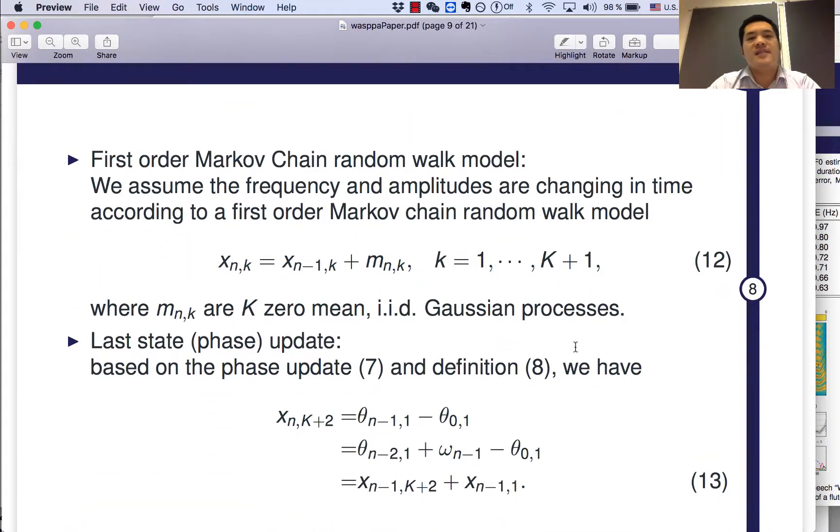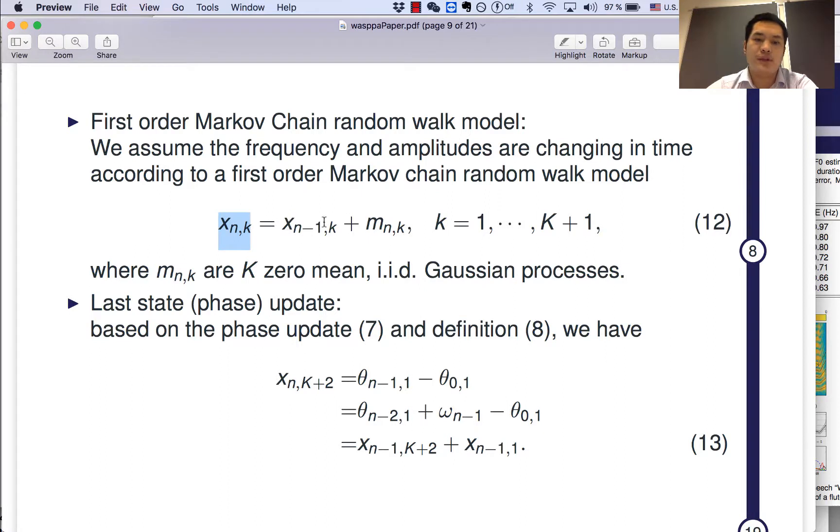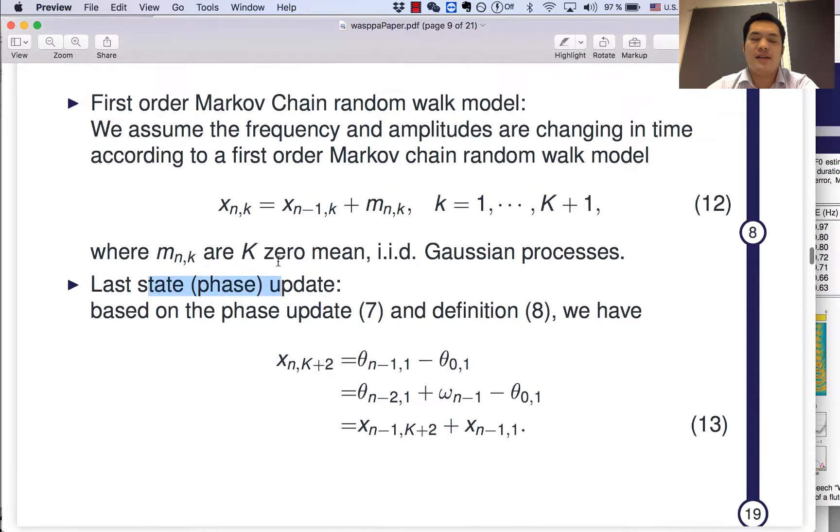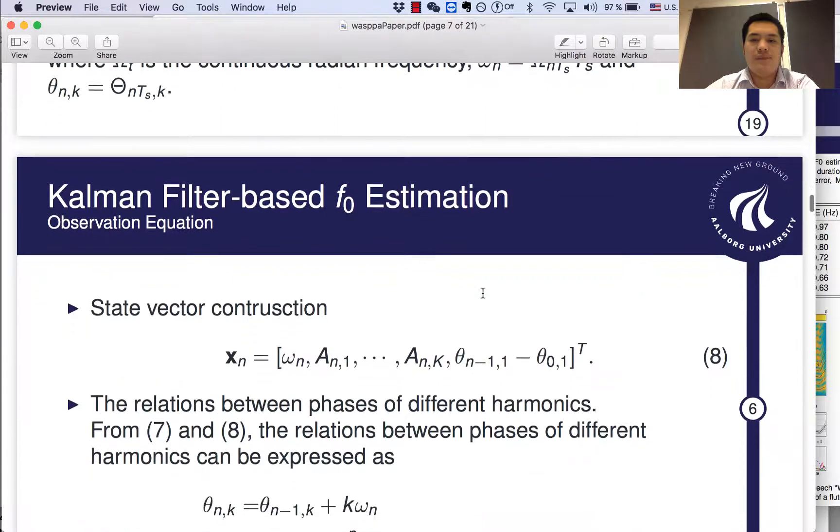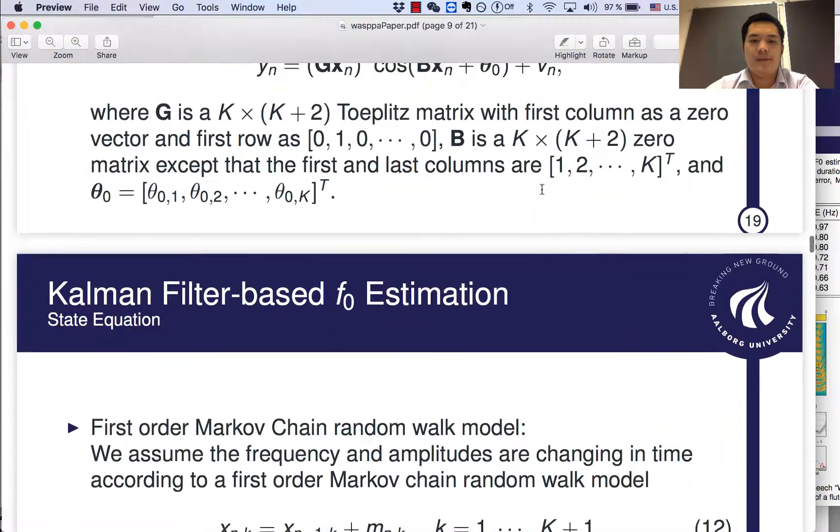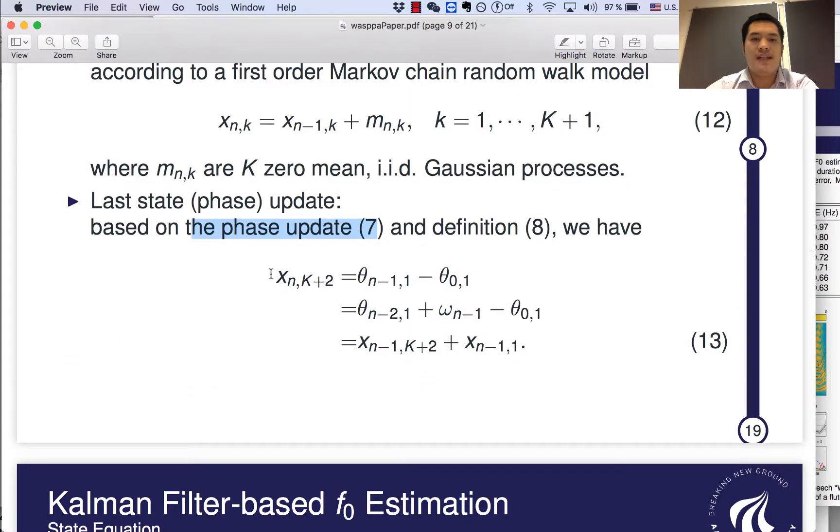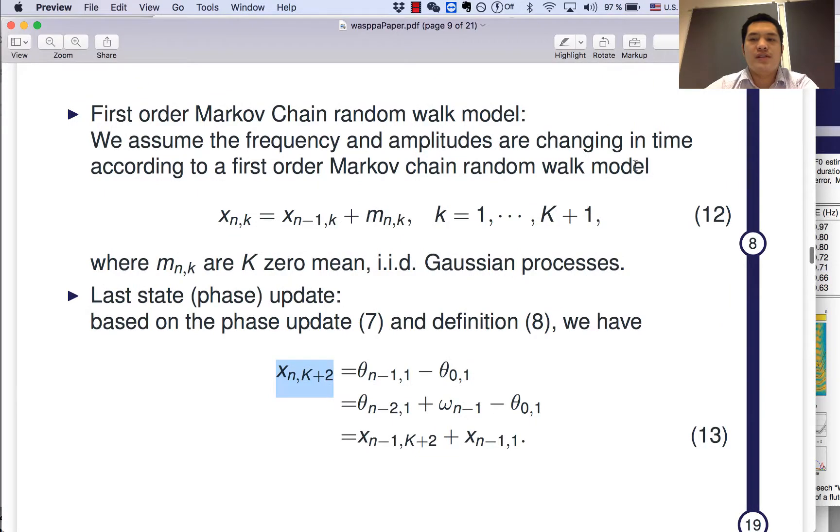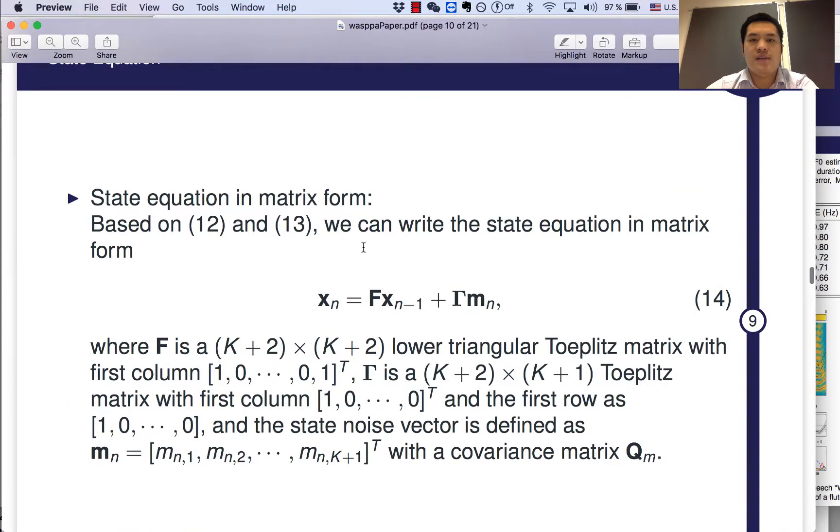Now, since we are trying to estimate the continuous fundamental frequency and the continuous amplitudes, we use the first-order Markov-Chain random walk model for both the fundamental frequency and the amplitudes. The last state, remember, the last state in our state vector is the phase. So, we use the phase update equation seven and nine and the definition eight. Then we can relate the last state with the previous time instance as equation 13. Then the state using both equations 12 and 13, we compute the state equation in matrix form as 14.